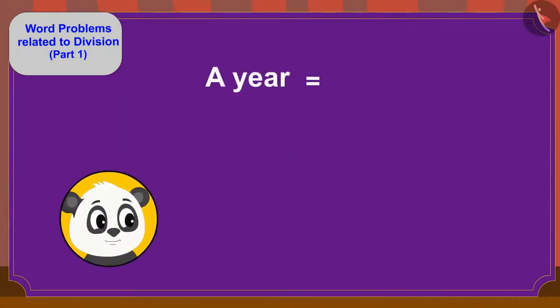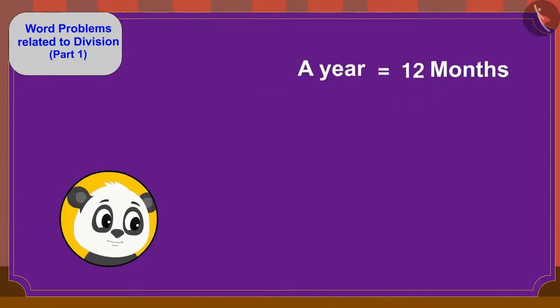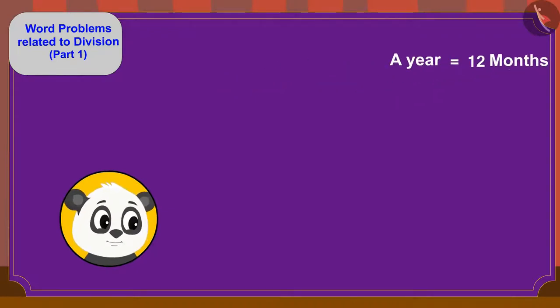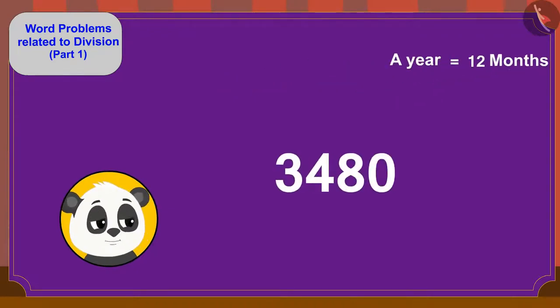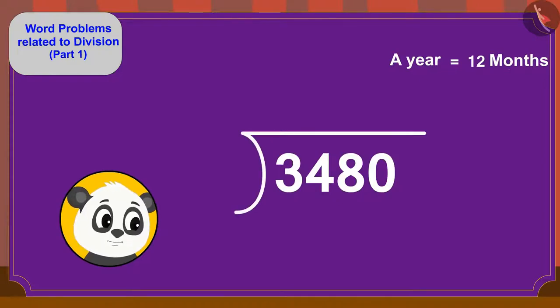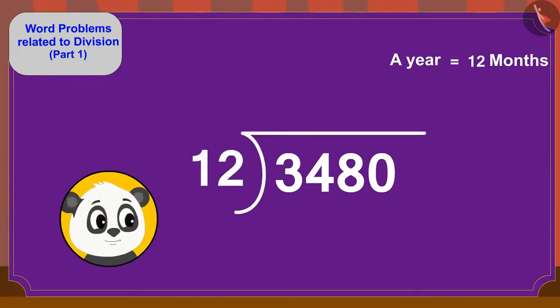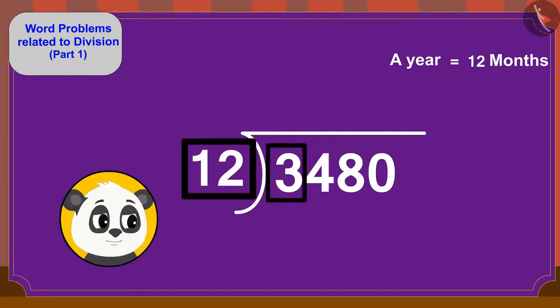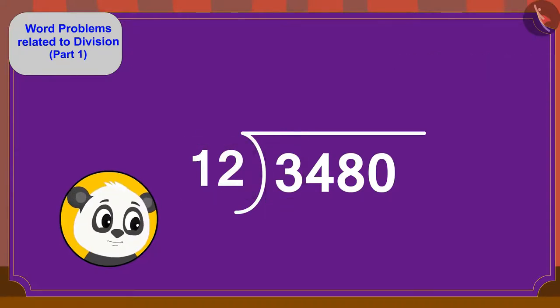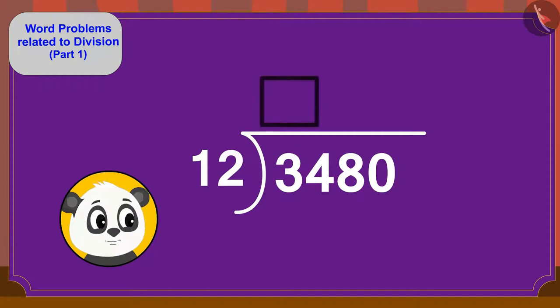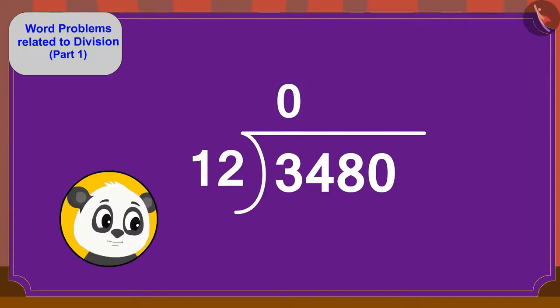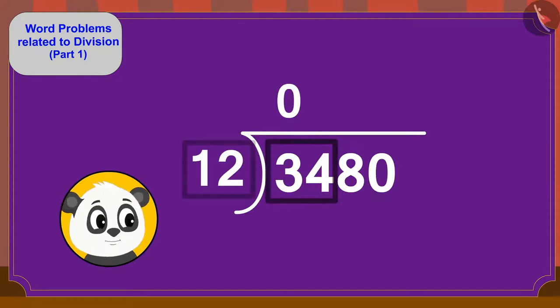A year has 12 months. Therefore, we will divide 3480 by 12. Can we divide 3 by 12? No. So, we will write 0 up here. Now, can we divide 34 by 12?